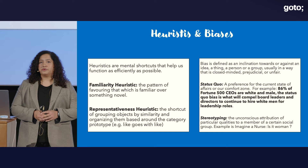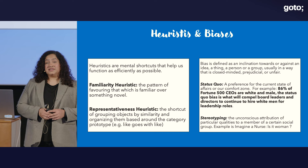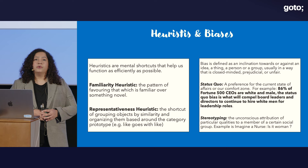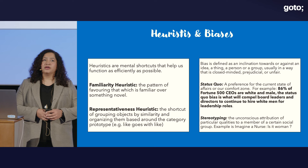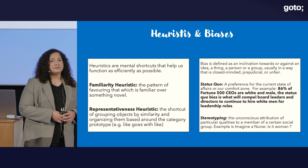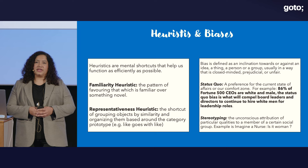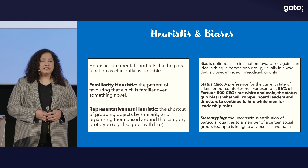Heuristics are basically shortcuts of the brain that help us understand things easily in different situations and make things easier for us. These heuristics are normally very helpful because they make tasks easy. But in doing so, sometimes they create biases. Biases are basically our inclination, our favoritism, our discrimination towards one thing — giving preference to one group of people, objects, etc., and having bias against others.